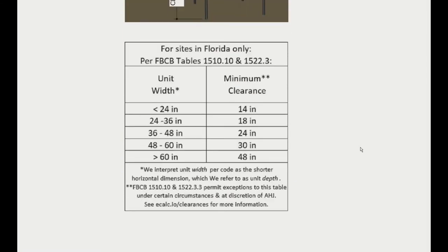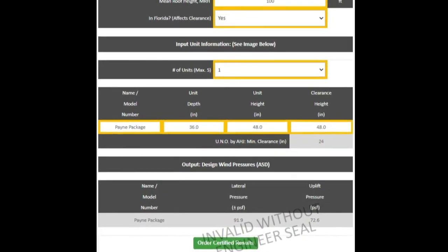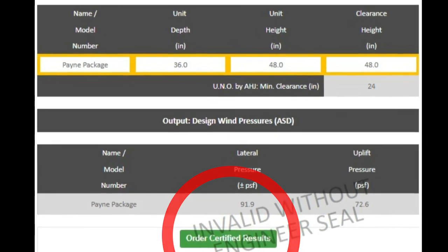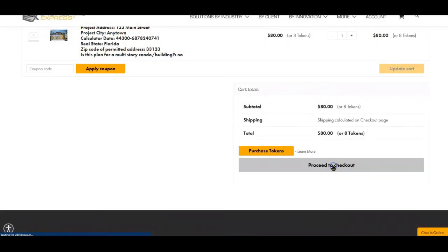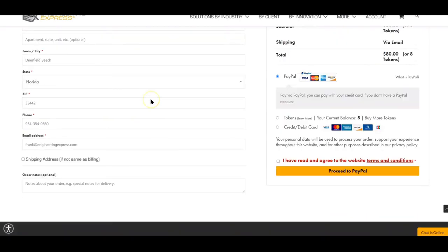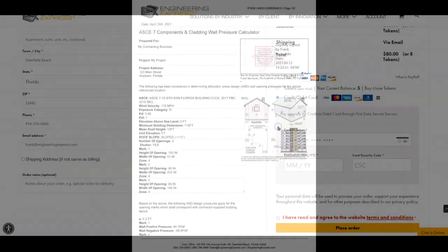Once you enter your site conditions and unit information, the design wind pressure results will be displayed. You can then order certified copies for permit by completing the information requested and checking out, just like any e-commerce store. The results will be reviewed by a licensed professional engineer and the signed and sealed report will be sent to you.